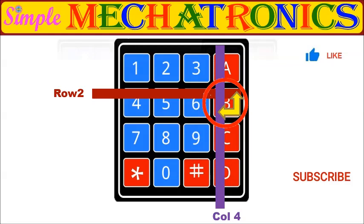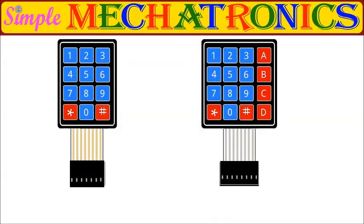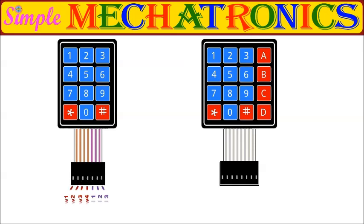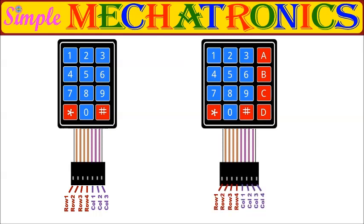A flexible connector is available at the bottom of the keypad. There are 7 number of pins for 4 by 3 matrix keypad, and 8 number of pins for 4 by 4 matrix keypad. The left 4 pins are connected to rows and remaining pins to columns.